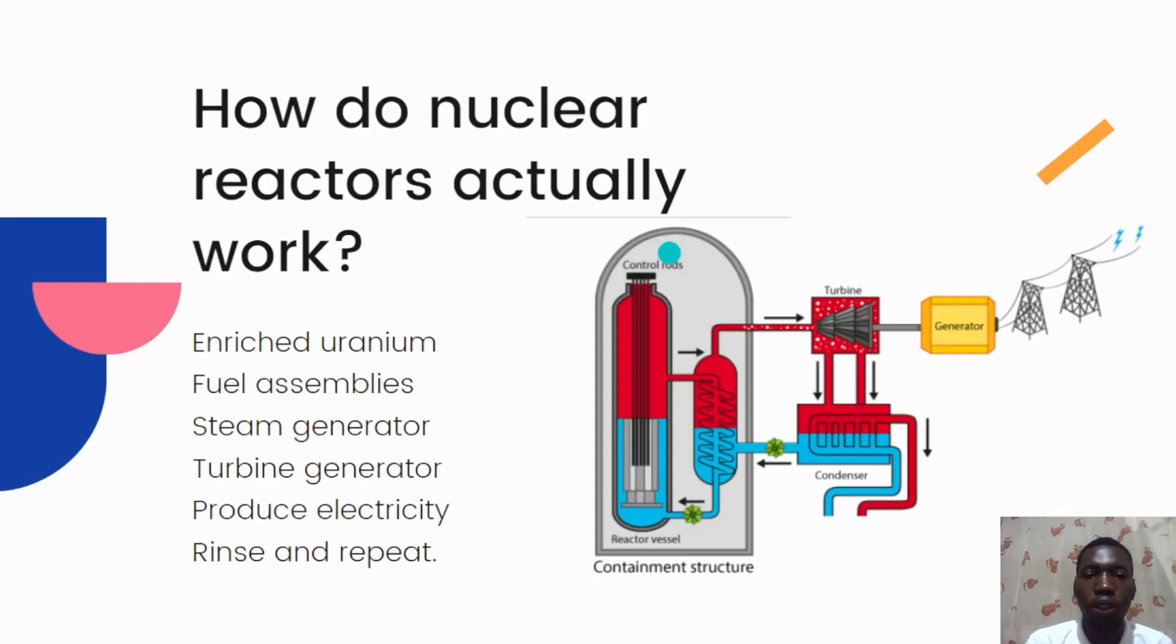Nuclear reactors are powered by enriched uranium. As mentioned earlier, the enriched uranium is formed into small pellets which are then loaded into long, thin fuel rods that are assembled into fuel assemblies. These fuel assemblies are arranged in a lattice pattern within the reactor core, with spaces between them filled with coolant such as water or heavy water that helps to transfer the heat produced by the nuclear reaction to the steam generator.